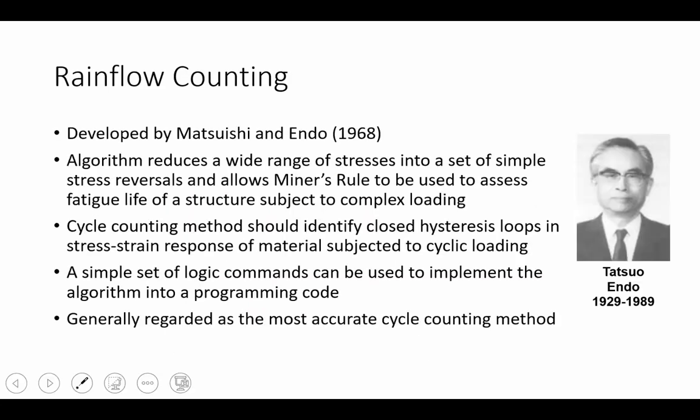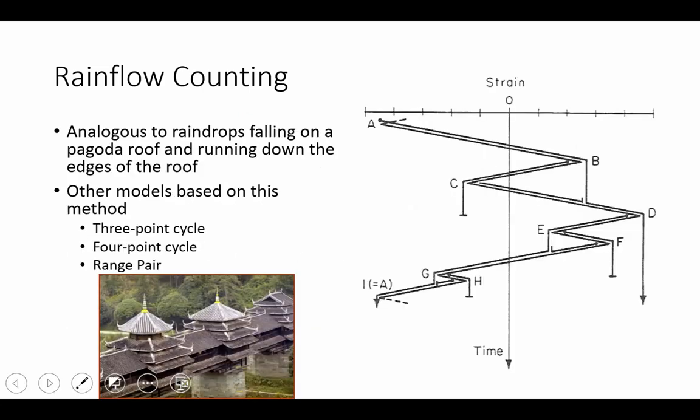Beyond the simple single parameter approaches, there are the more complex double parameter approaches. One of them and one of the most popular is rain flow counting. This is a method developed by Endo in 1968, and it is a method that is fairly popular for dealing with variable amplitude loading data.